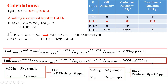Pay attention to these values: 4 mL of sulfuric acid with normality 0.02 N is used for titration of an unknown amount of carbonate in 50 grams of water. One equivalent of sulfuric acid reacts with one equivalent of carbonate, and one equivalent of carbonate is 50 grams as calcium carbonate. Therefore, we have 0.004 grams of carbonate in 50 grams of water.